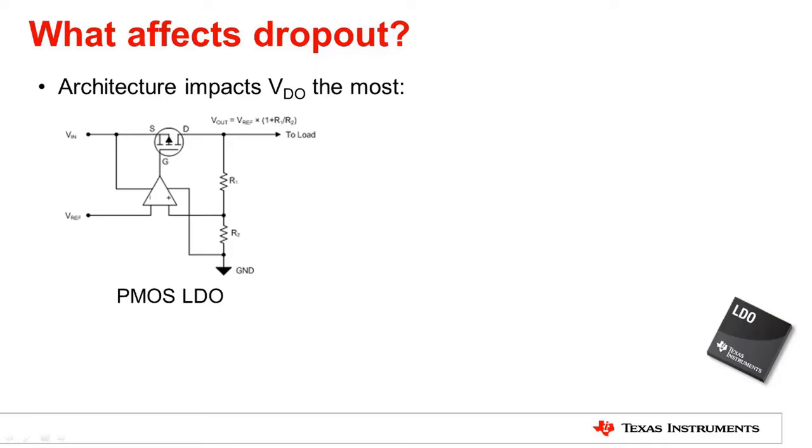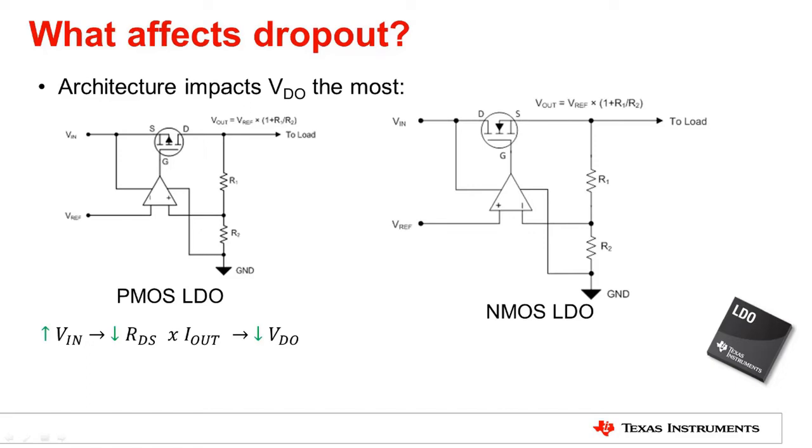Because PMOSFETs work with a negative gate-to-source voltage, or VGS, the higher the input voltage, the more negative VGS becomes, and therefore a lower RDS is achieved, directly reducing our dropout. The dropout is proportional to the current output, but for this comparison, we will treat it as a constant.